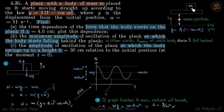We have a plank on which a body of mass m is kept. The plank and body are performing SHM. The mean position is defined, and the equation of the SHM is given as y = a(1 - cos ωt). From this equation, at t = 0, y = 0, so the plank-mass system starts at y = 0.